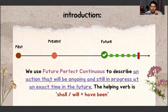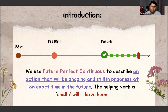an action that will be ongoing and still in progress at an exact time in the future. This is an ongoing action, and the helping verbs are shall/will have been.